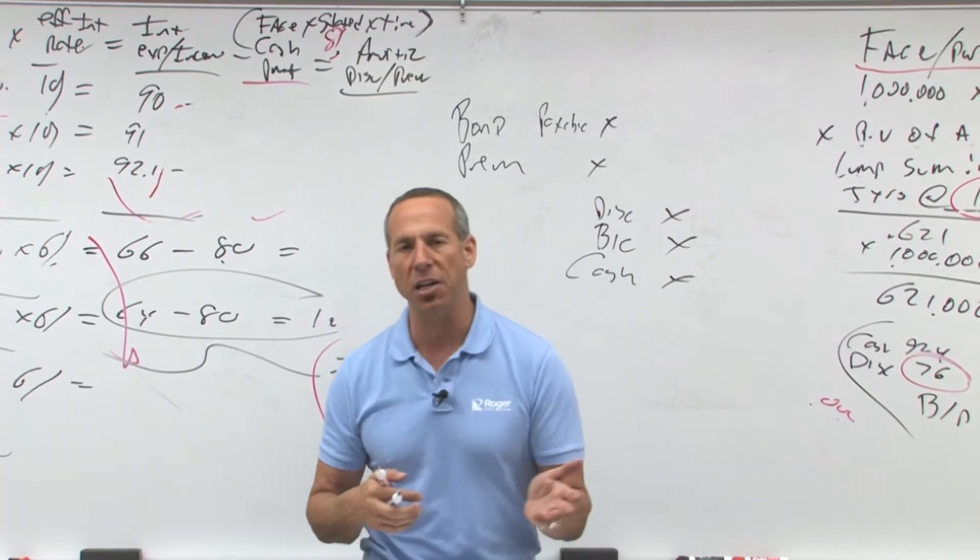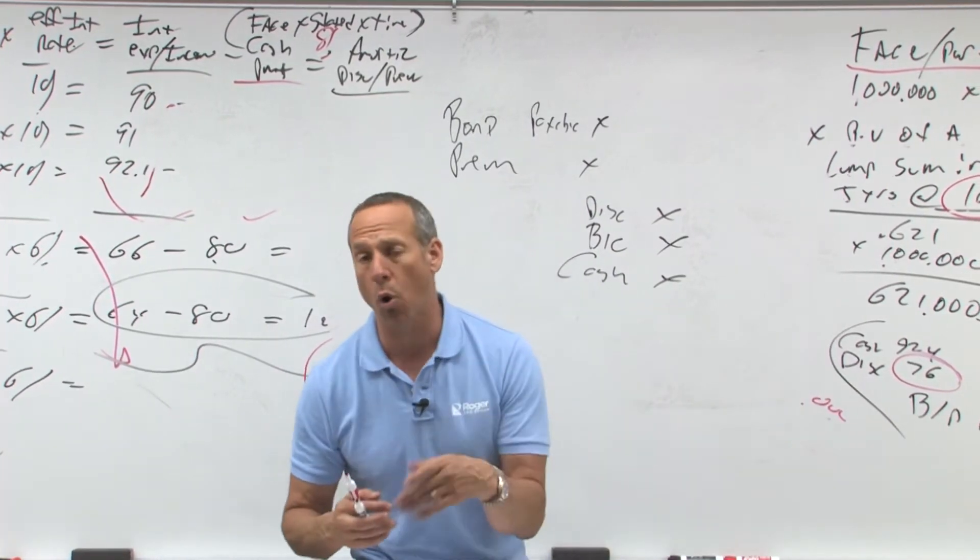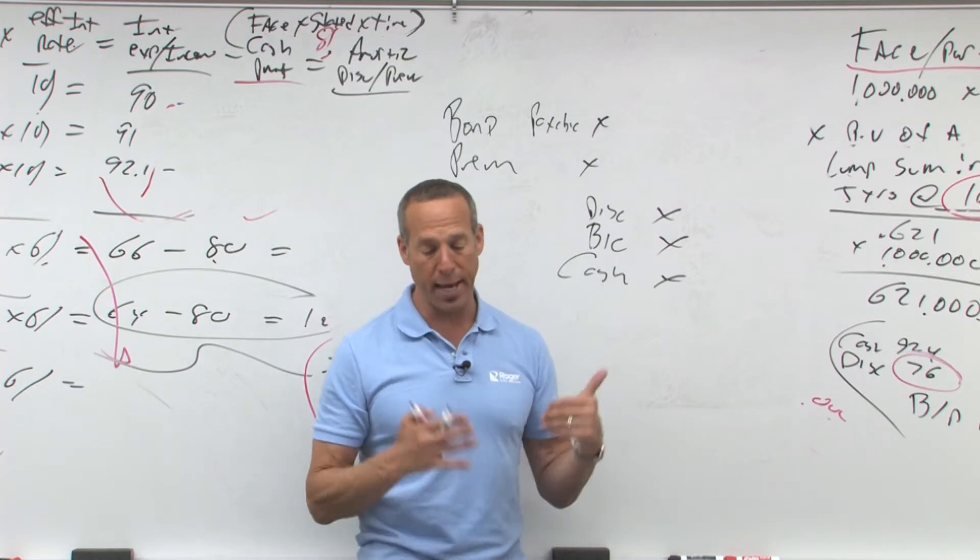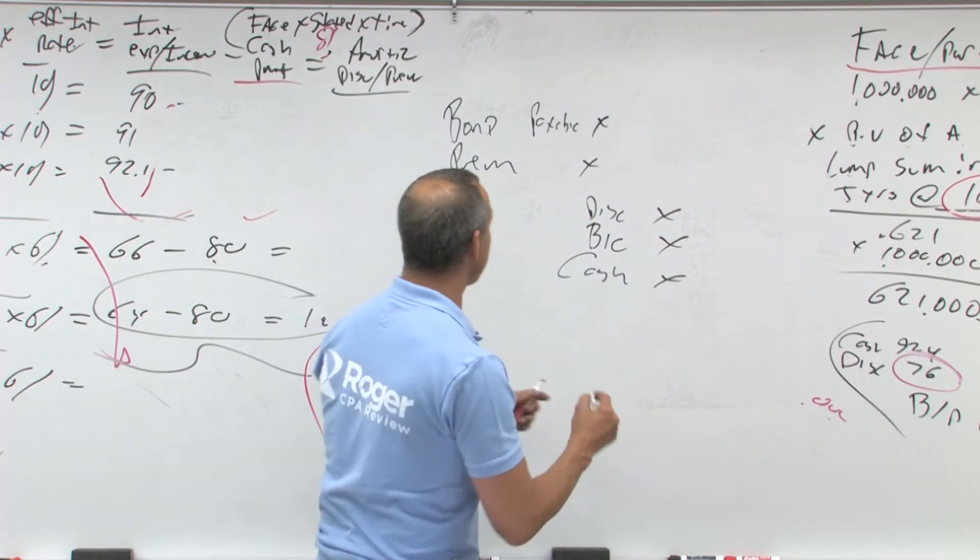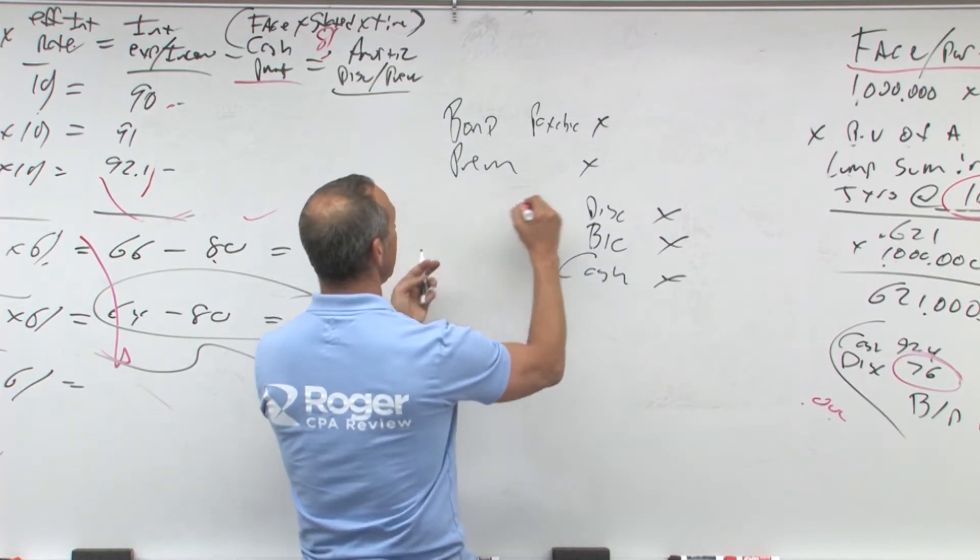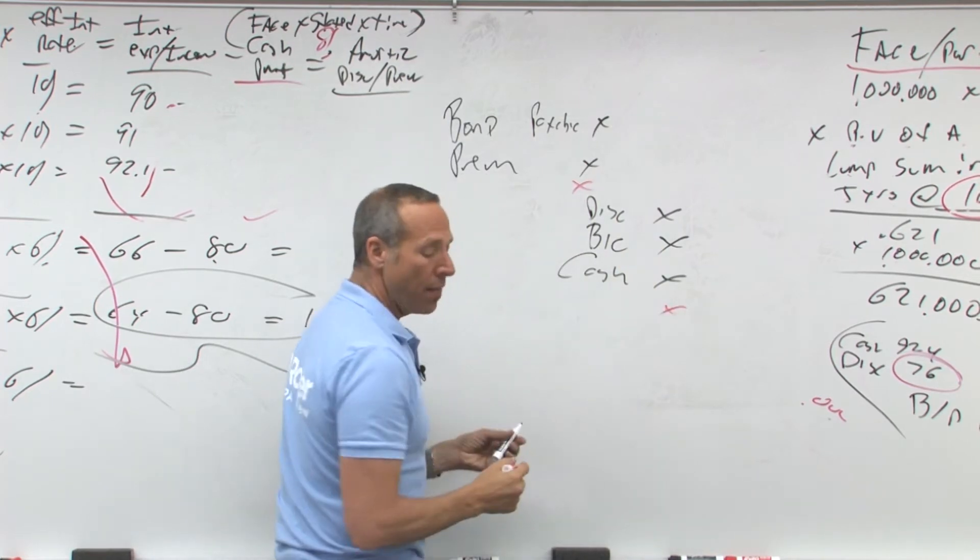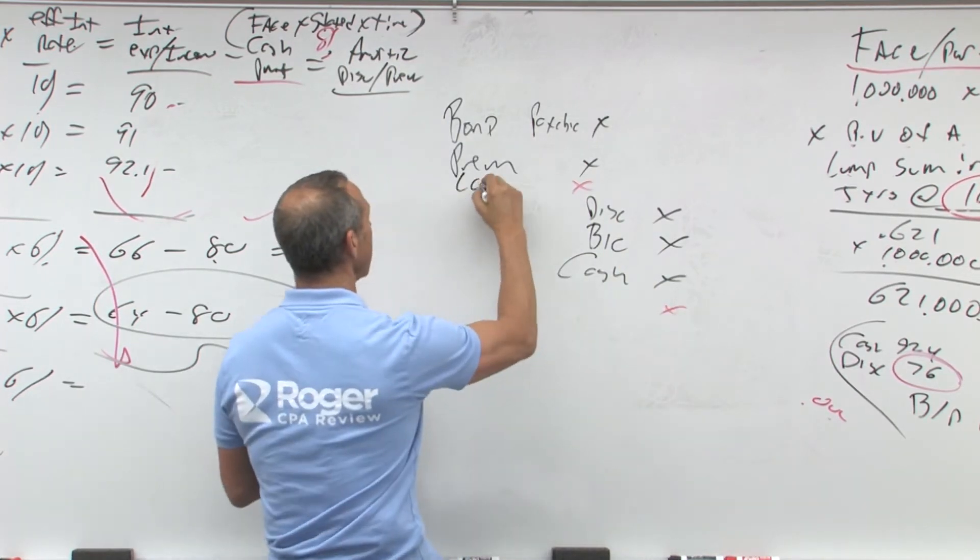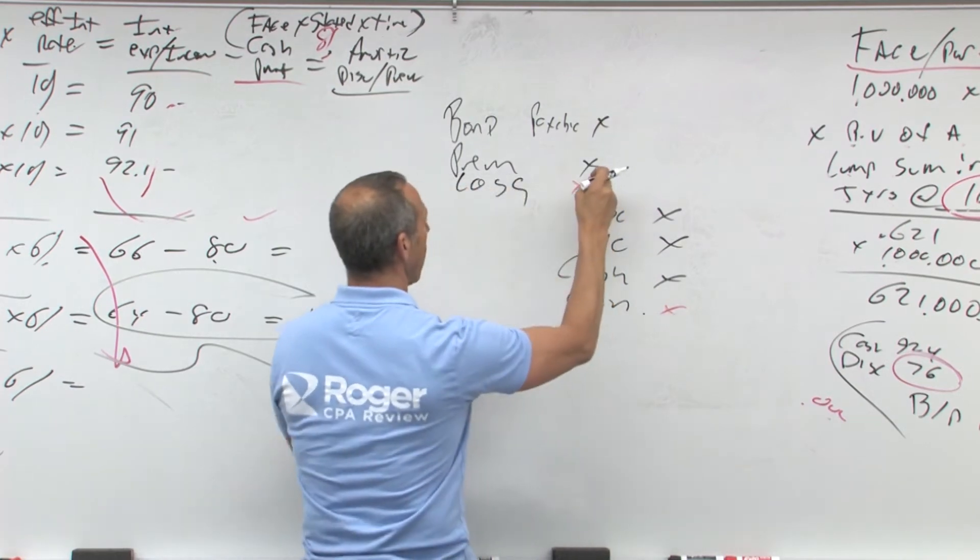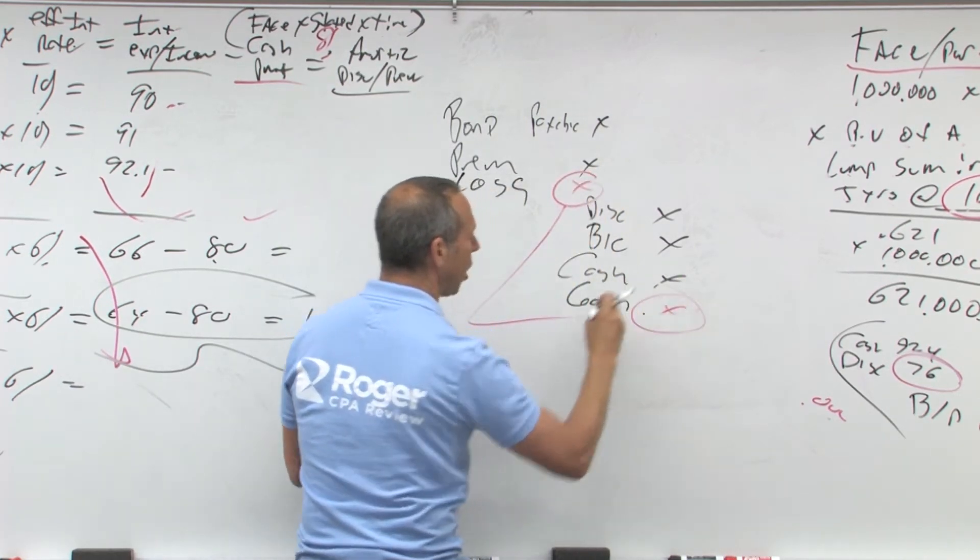They're going to say the bonds were retired at 94. The bonds were retired at 101. Whatever amount of cash you paid, that's what you paid. The difference will either be a debit or a credit. And that debit or credit will either be a loss or a gain. Now this is a gain or a loss.